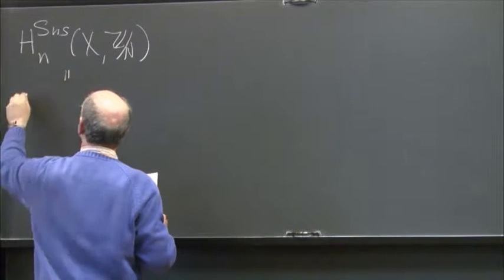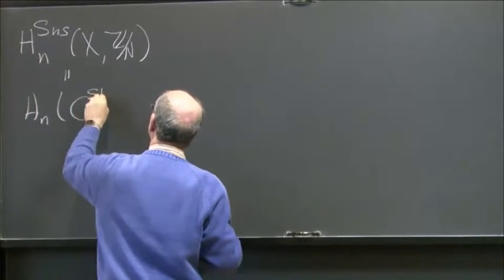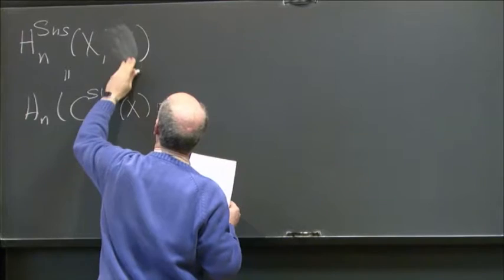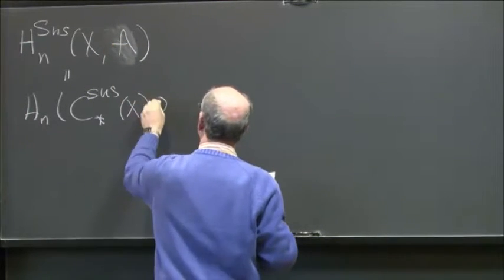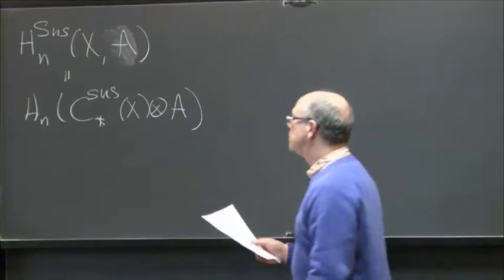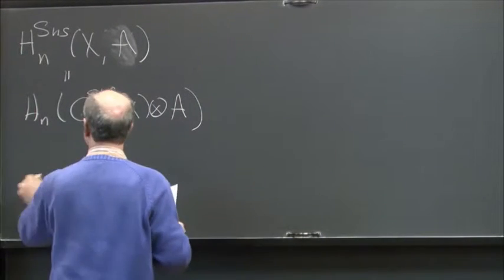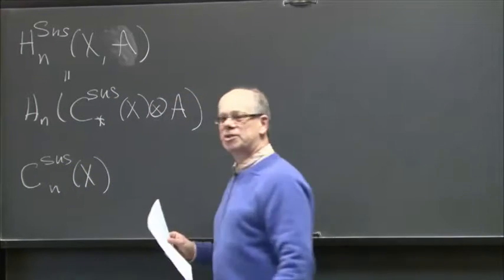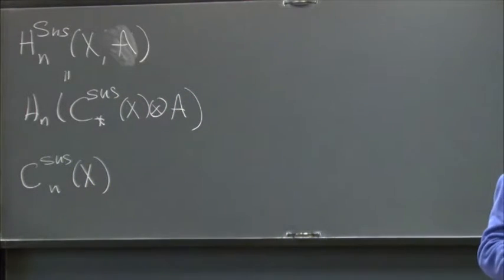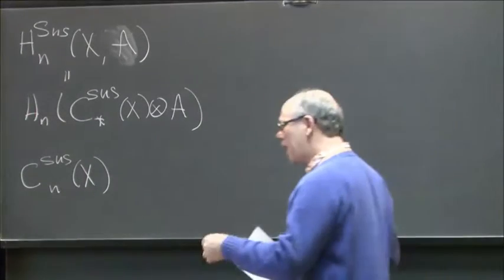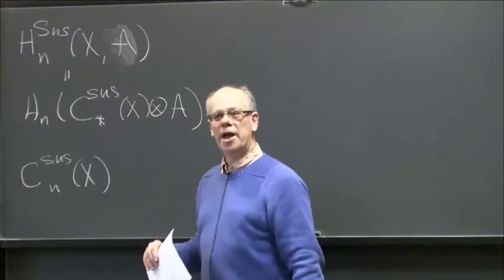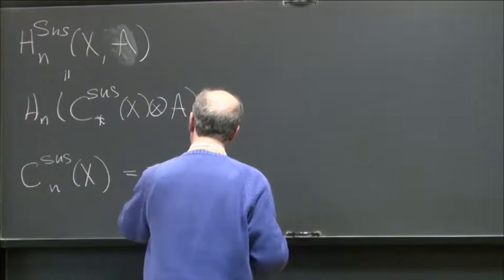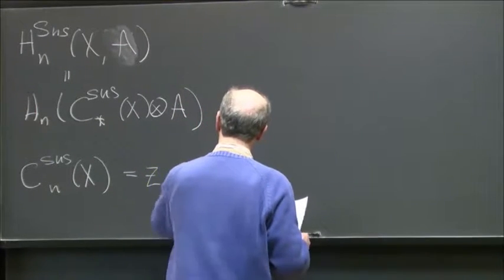We all know what singular homology is, and the Suslin homology is similarly given as the homology of a certain chain complex, using homological indexing. This is given as the homology of the Suslin complex — or for an arbitrary abelian group A, you just tensor this chain complex with A. And how do you define this chain complex? Essentially, it consists of maps of an algebraic N-simplex into some infinite symmetric product of X.